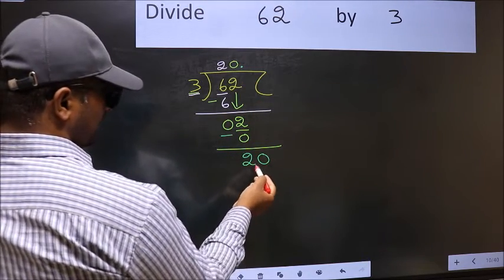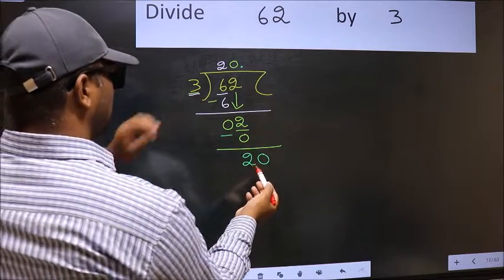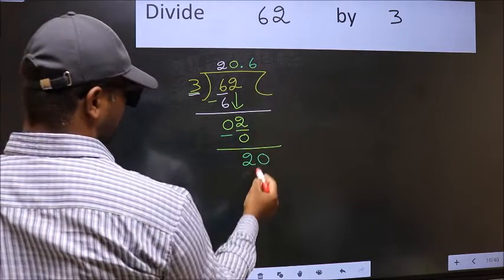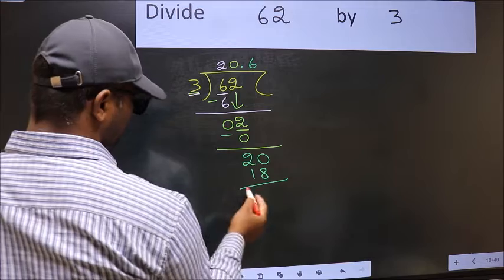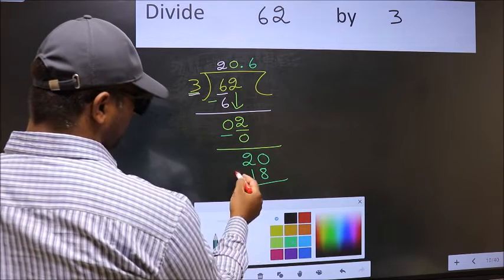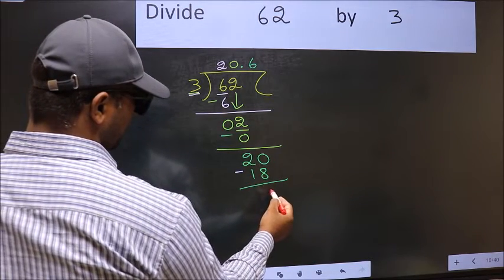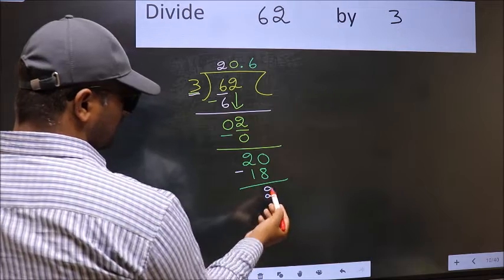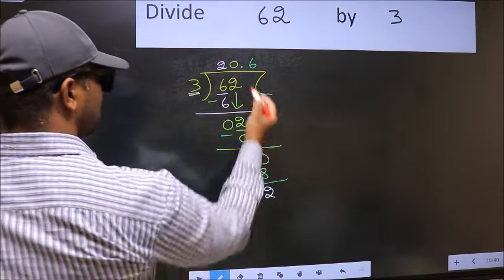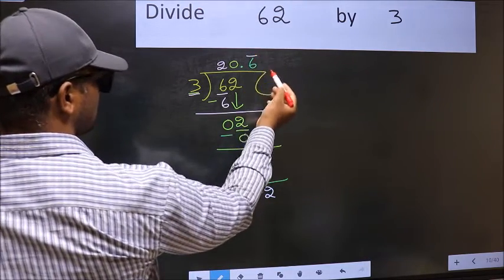So 20. A number close to 20 in the 3 table is 3, 6, 18. Now you subtract. 20 minus 18 is 2. We got 2 again. That means we get a bar on this number 6.